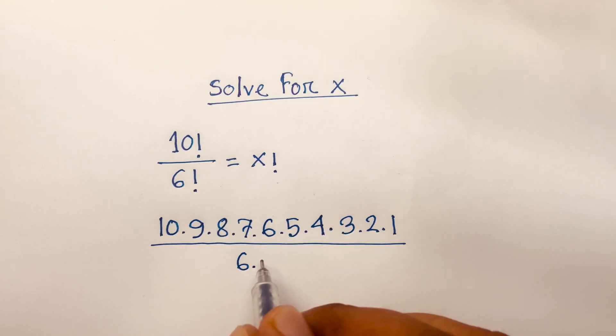So 6 factorial will be 6 times 5 times 4 times 3 times 2 times 1.